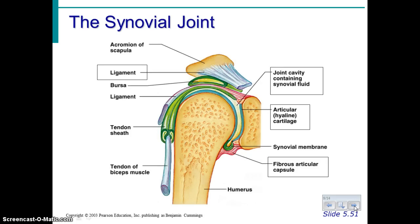Looking at a diagram, we can see the four parts: the articular or hyaline cartilage on the ends of each bone, the synovial fluid in the middle — these two things together keep the bones from rubbing on one another — and then a fibrous capsule around the joint and the ligaments holding one bone to the other.